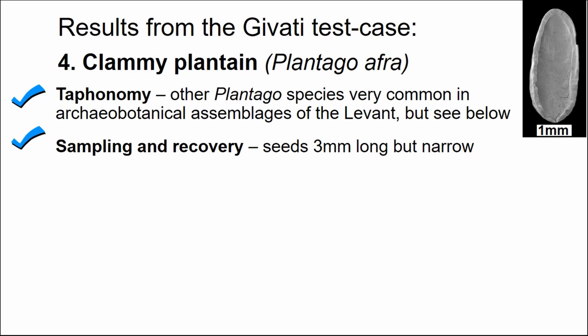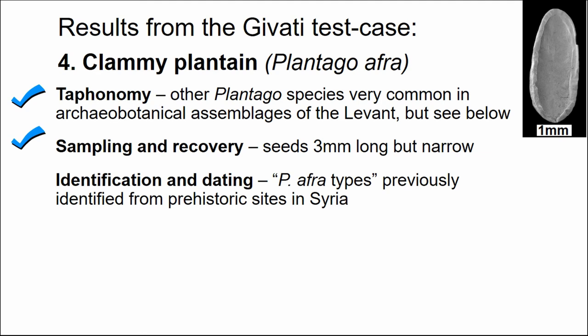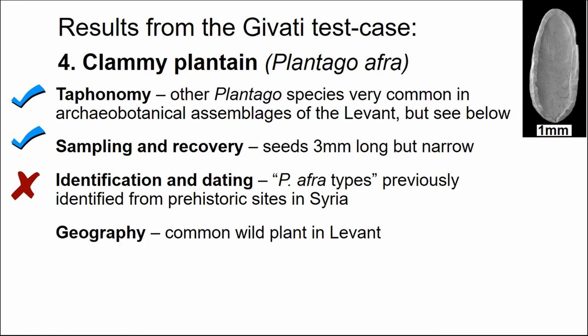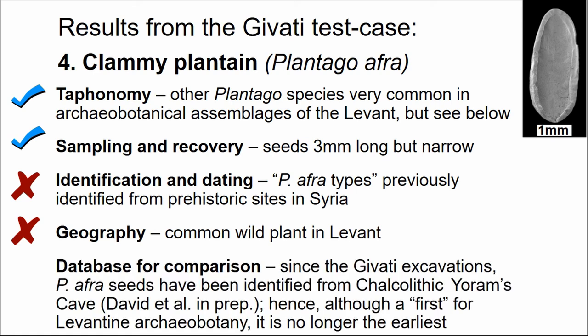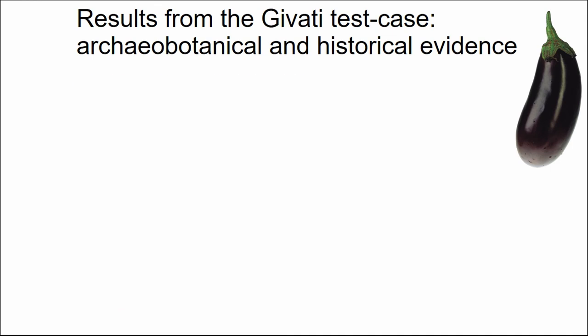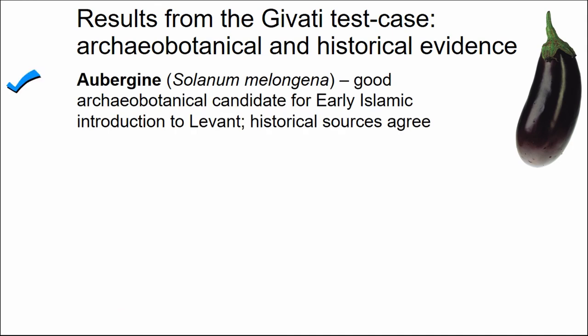For clammy plantain: taphonomically, relatives are found in the region — not a problem. Sampling and recovery is fine. However, Plantago and clammy plantain types were previously identified in prehistoric sites, which suggests they may have been present earlier. Geographically, it is a common wild plant in the Levant, so there's no reason it would be a new introduction. The decisive finding is that since the Givati excavations, another much earlier instance of Plantago afra was found in Yoram's Cave in Israel, so it is no longer the earliest.